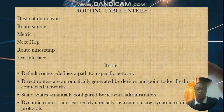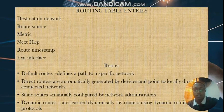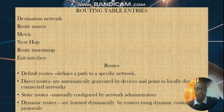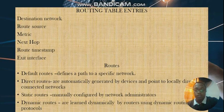The entries stored in the IP routing table include: the destination network, the route source which is the source network, the metric depending on the routing protocol being used, the next hop which is the next router to which the packet will be forwarded, the route timestamp which is the time the packet is sent, and the exit interface through which the packet is forwarded out.